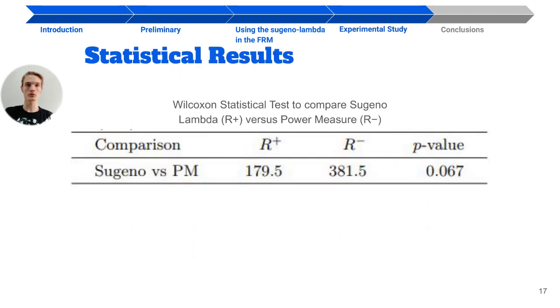The results related with this test are available in the shown table, where R+ represents the rank obtained by the Sugeno lambda as a fuzzy measure, and R- is the ranking related with the power measure.